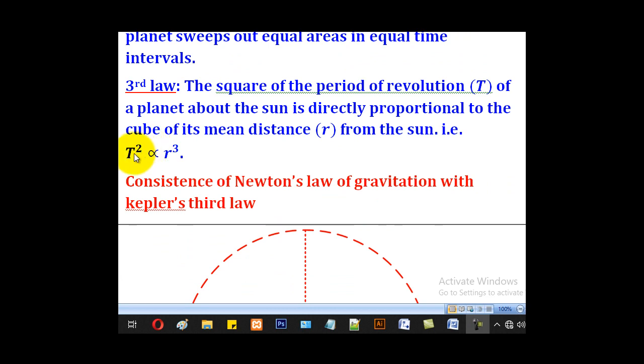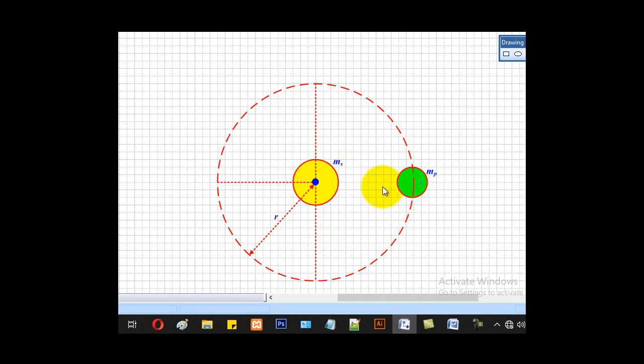Now this period T is the time taken to cover one complete revolution. For example, if this is the sun and this is our planet, and you start timing at this point...